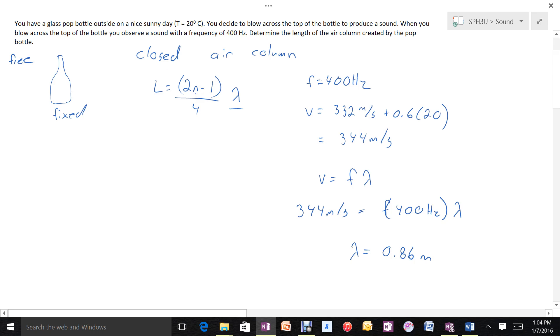With frequency and speed, we can find the wavelength, and then use that to find the length of the pop bottle. The universal wave equation says speed equals frequency times wavelength. The frequency is 400 hertz. Solving for wavelength gives us 0.86 meters.